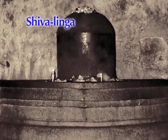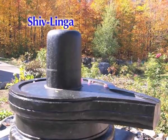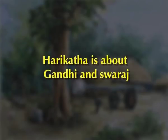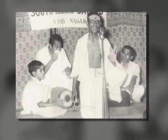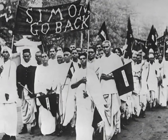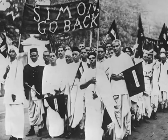Moorthy, a young man, digs out a half-sunk Shivalinga and suggests it should be cleaned and worshipped in a temple built for it. This temple leads to festivals being celebrated, and on the occasion of Shankar Jayanti a Harikata discourse is arranged. This Harikata is actually political propaganda in disguise, because it speaks of Gandhi and Swaraj, equating these issues with that of gods, for which the Harikata man is arrested. Moorthy and others burn foreign clothes and formally become nationalists.